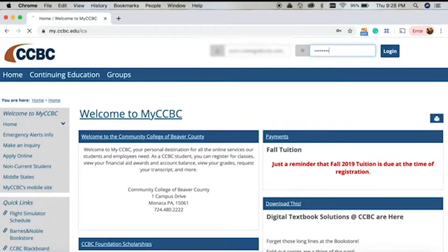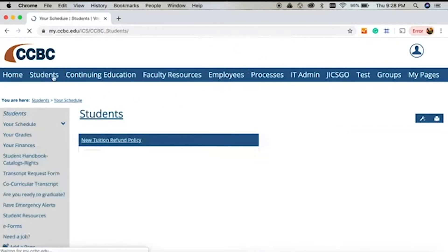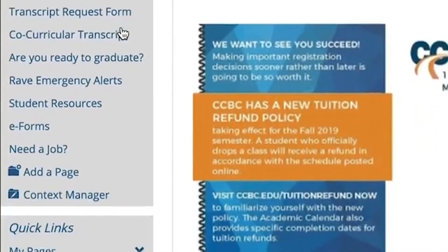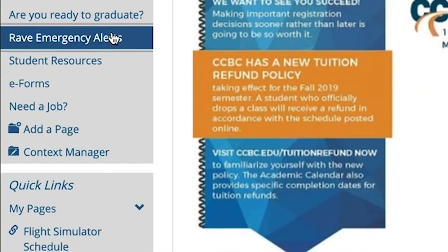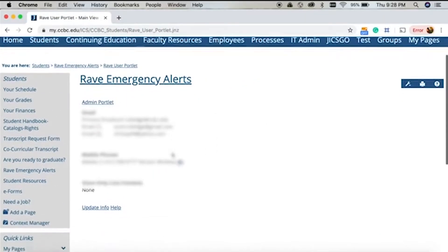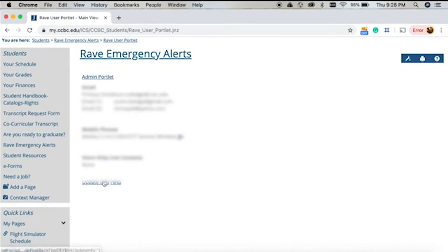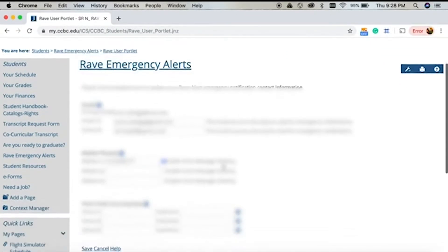To sign up, please go to myccbc.edu and navigate to the RAVE tab located on the left side of the screen. You can specify how you want to receive alerts, whether it be by phone, text or email.